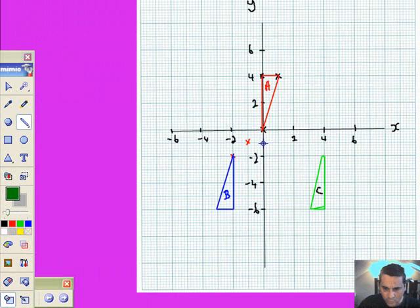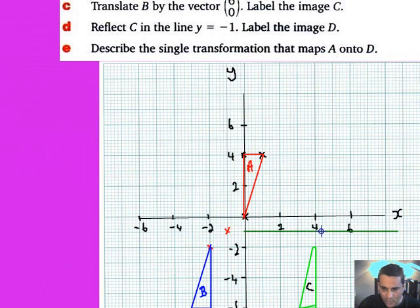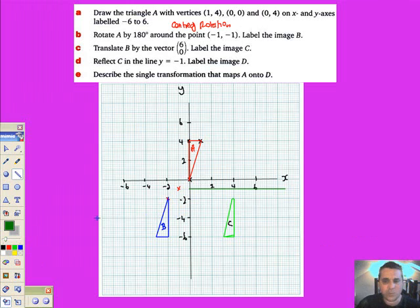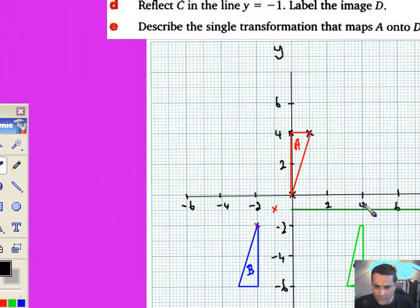It goes across here like that because I'm reflecting this into the line y equals minus 1 and end up in this first quadrant here. Let's label that up nicely: that's the line y equals minus 1.